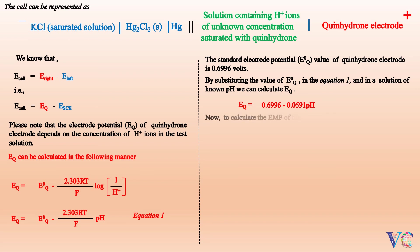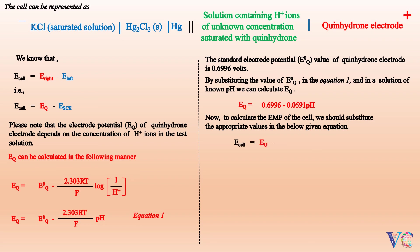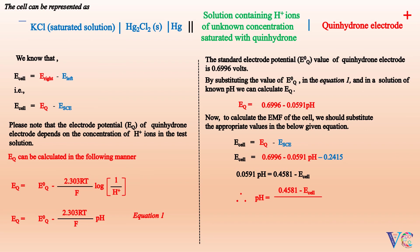To calculate the EMF of the cell, substitute the appropriate values: EMF of the cell = electrode potential of quinhydrone electrode − electrode potential of saturated calomel electrode. Therefore, EMF = 0.6996 − 0.0591·pH − 0.2415. That is, 0.0591·pH = (0.4581 − EMF of the cell), so pH = (0.4581 − EMF of the cell) / 0.0591.